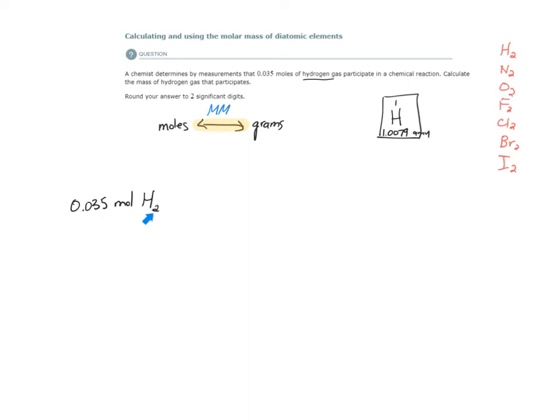That's the correct chemical formula. So we want the molar mass of molecular hydrogen. It's not going to be 1.0079 grams per mole.